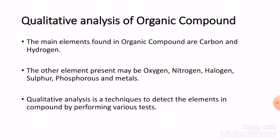Now let's move to the next point: qualitative analysis of organic compounds. The first point is that the main elements found in organic compounds are carbon and hydrogen. In any compound considered organic, you should find carbon and hydrogen as main constituents. The other elements that may be present are oxygen, nitrogen, halogen, sulfur, phosphorus, and metals.